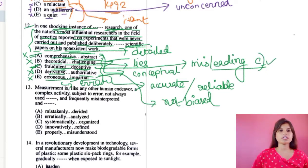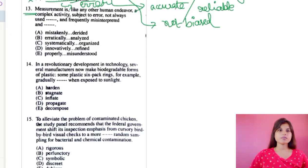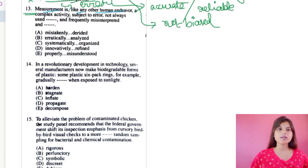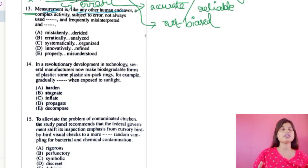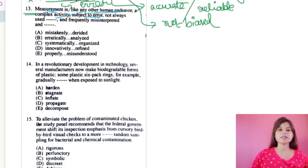Question 13: Measurement is like any other human endeavour. Endeavour means any kind of try, attempt, venture, or something you are undertaking. So measurement is just like any other human work you are starting and struggling to undertake. It is a complex activity which is subject to error — any kind of measurement can have errors. The sentence reads: not always used dash and frequently misinterpreted and dash.